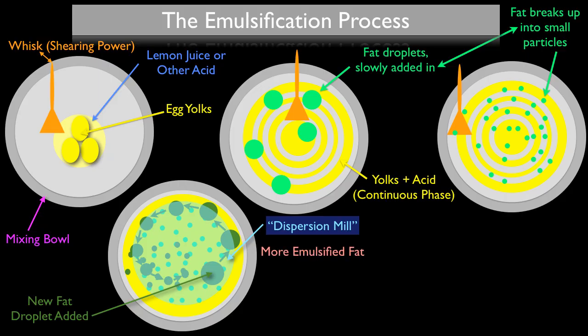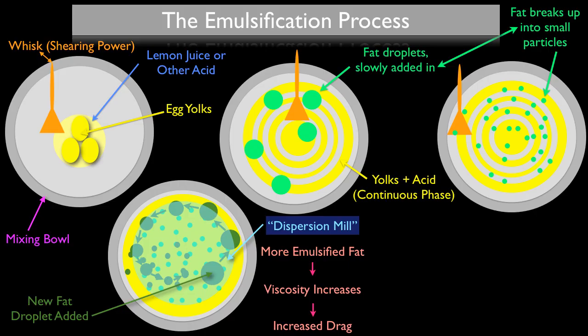The more emulsified fat that you add, the more viscosity you will have — the viscosity will increase. As we talked about last episode, viscosity in and of itself can actually work as a stabilizer. This happens because the more viscous or thicker your emulsification becomes, you will have more increased drag on your dispersed phase — in this case the fat particles — and as these fat particles have increased drag on them they will start to split up into a smaller dispersed phase, and the shearing power will actually increase. The emulsion by nature will become more stable because you have a smaller dispersed phase, and because of the viscosity acting as a stabilizer and the already dispersed fat acting as a dispersion mill, towards the end of the emulsification process you can actually add the fat more quickly.